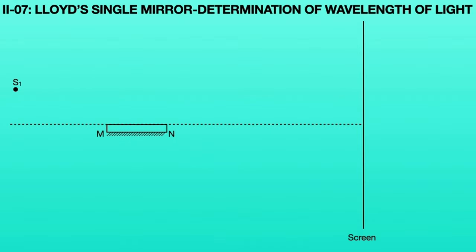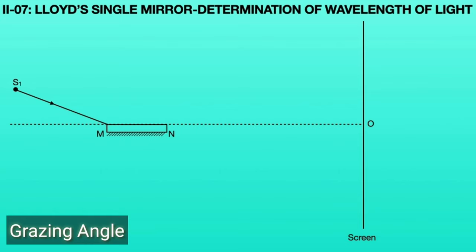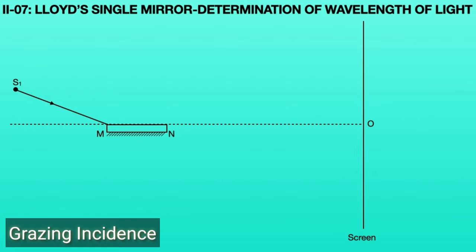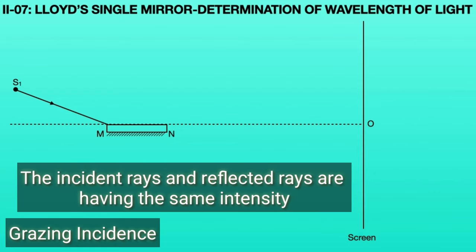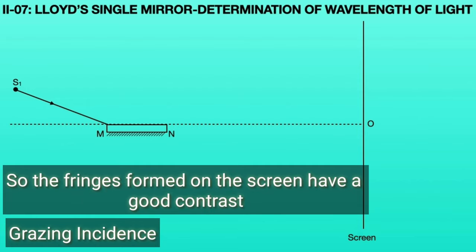These two lines meet at point O. One light ray coming from S1 is incident on the mirror at edge M with grazing angle. Grazing incidence means the incident ray and reflected ray have the same intensity. So the fringes formed on the screen have good contrast, which is why we use grazing incidence.